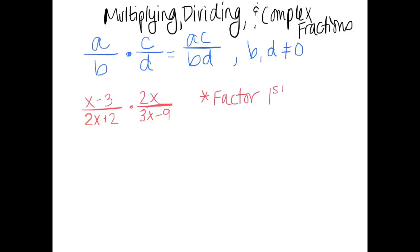Factor first. Let's see what that would look like. Well, the x minus 3 can't be factored anymore. 4x plus 2, I know we can pull a 2 out, and that will be left with x plus 1. Times 2x, there's nothing we can really do with that. And if we factor out a 3 from the 3x minus 9, we get 3 times the quantity x minus 3.